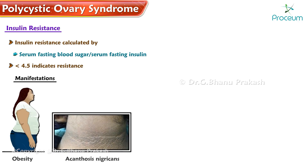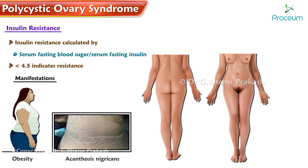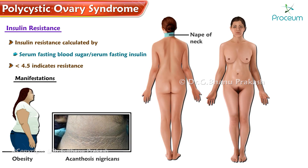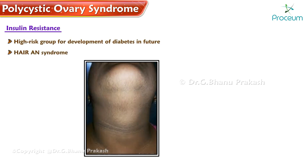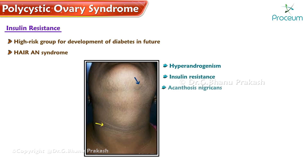Acanthosis nigricans refers to hyperpigmented velvety patches on the nape of the neck, axilla, submammary sulcus, and thighs. These patients are a high-risk group for the development of diabetes in the future. HAIR-AN syndrome has the following features: hyperandrogenism, insulin resistance, and acanthosis nigricans.